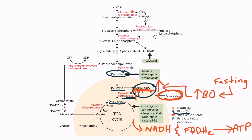Also note that amino acids — for example, glucogenic amino acids — can be metabolized through the TCA cycle and produce ATP. As the ATP rises, it inhibits the TCA cycle. Both inhibition of the TCA cycle and beta-oxidation cause acetyl-CoA to rise, and this is a powerful activator of pyruvate carboxylase.